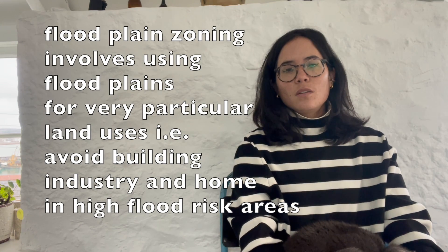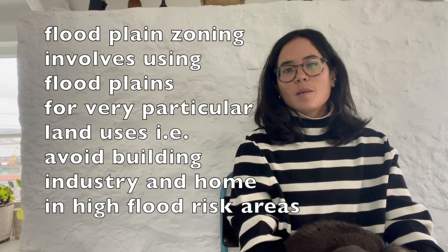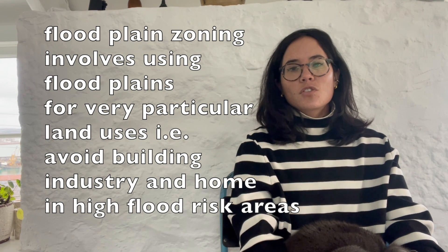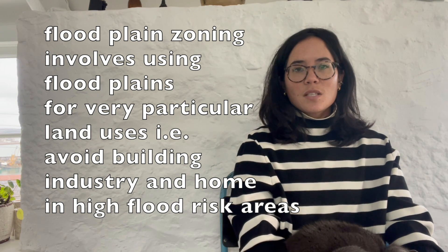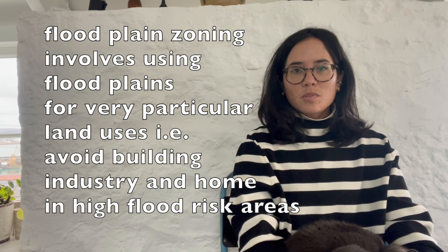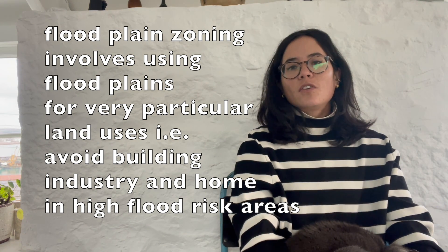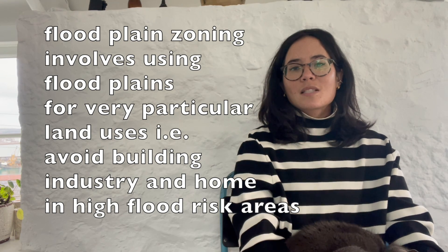Floodplain zoning involves using floodplains for very particular land uses and restricting the building of houses and factories in areas more susceptible to flooding. More expensive buildings are built further away from the river in areas less likely to flood, which reduces damage to these types of buildings. However, it's not always possible to change existing land uses and people will still be inclined to build and buy homes there. It's important to check whether a house you're planning to buy is built on land likely to flood, as it should be avoided at all costs.